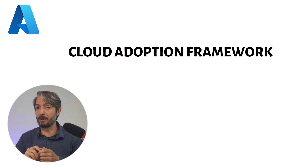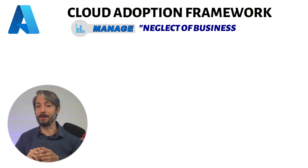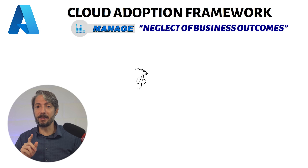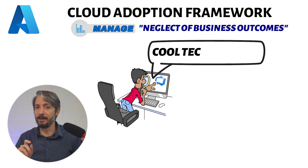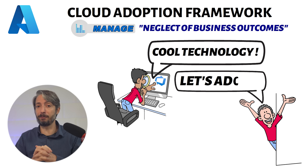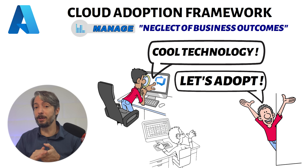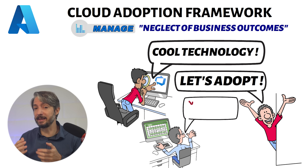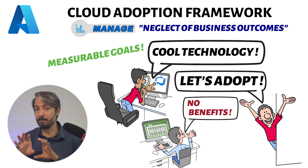Moving on to the Manage pillar, which has one anti-pattern called neglect of business outcomes. This is where the focus is on a specific technology instead of the desired business outcome. For example, you may be excited about a new improved CI/CD platform with more functionality, adopt it, only to find out later that it didn't bring any tangible improvements such as faster deployment and time to market. This can be avoided by ensuring that business and technology goals are aligned and — very importantly — that they can be measured.